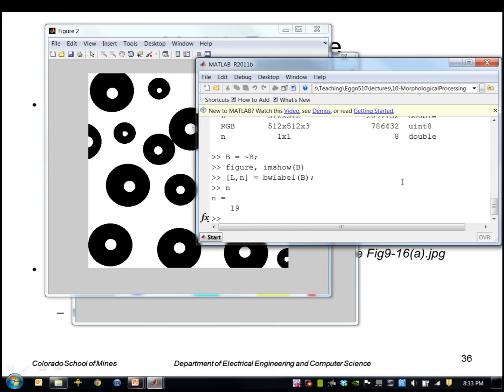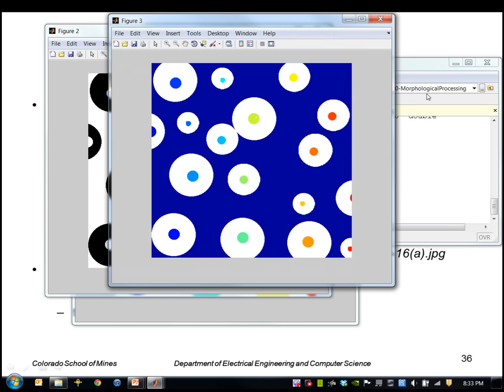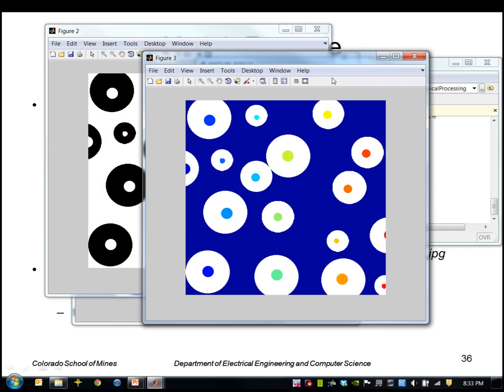I'll go ahead and do the false coloring. And you can see the different regions that it found here. So basically the background that used to be all black is now assigned a single color, and the insides of these donuts are all different regions here.